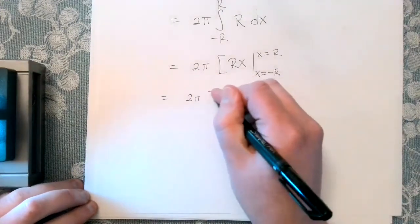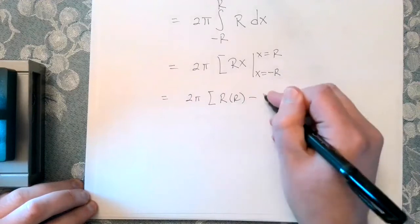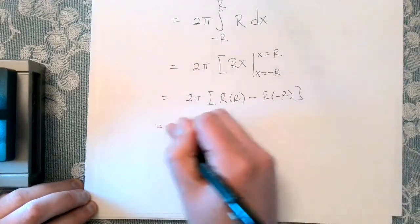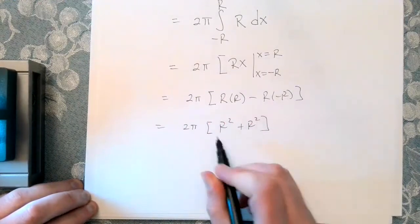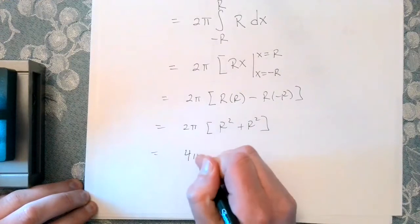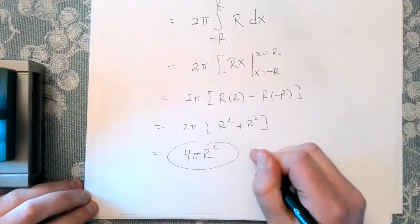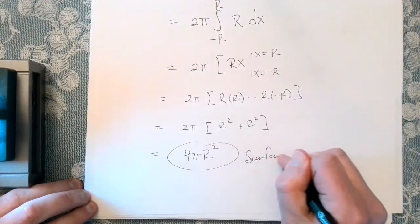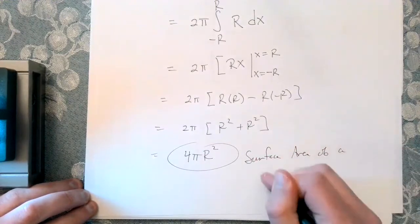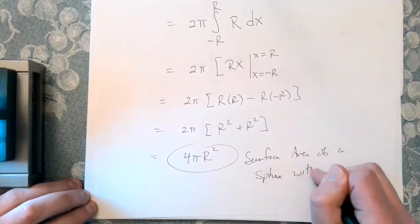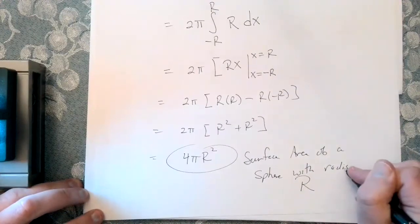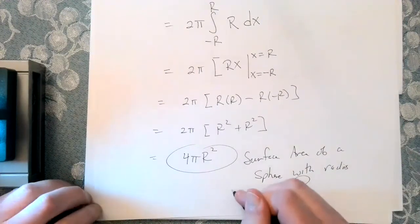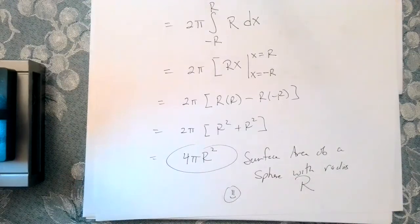So we're just going to carry out the fundamental theorem. So it's going to give us r times r minus r minus r times minus r. And so this is r squared plus r squared. So that's going to be 2r squared for a total of 4 pi r squared. So there's the surface area of a sphere with radius big R. So that's pretty cool. So if you've seen that formula before, this was a neat way to compute it by hand.